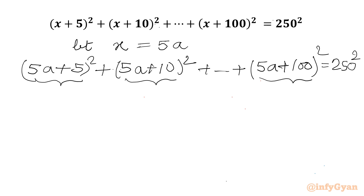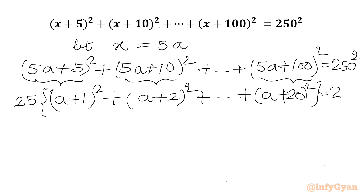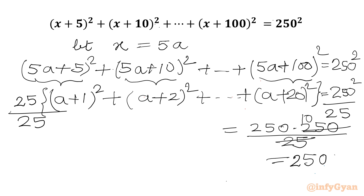Taking 5 common from each bracket, it comes out as 25. So we write 25 times [(a+1)² + (a+2)² + ... + (a+20)²] = 250². Now I will divide both sides by 25, giving us (a+1)² + (a+2)² + ... + (a+20)² = 2500.